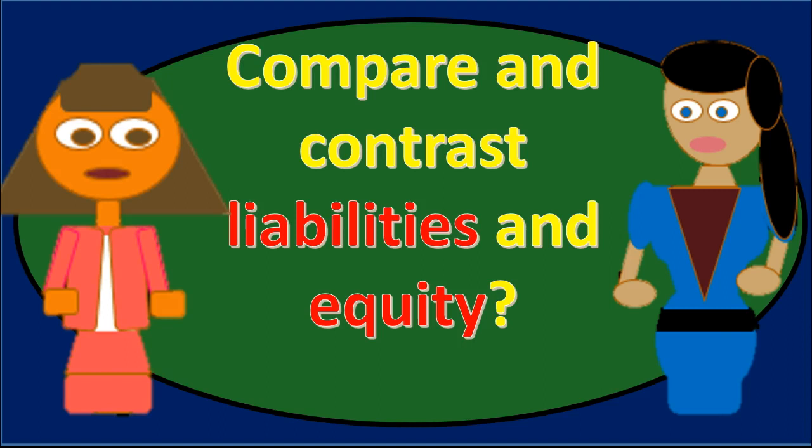That's the basic definition of liabilities. There are some areas where it can be more complex, such as contingent liabilities, but for our purposes this is a sufficient definition: a past business transaction which obligates us to owe something — either services or money — in the future.